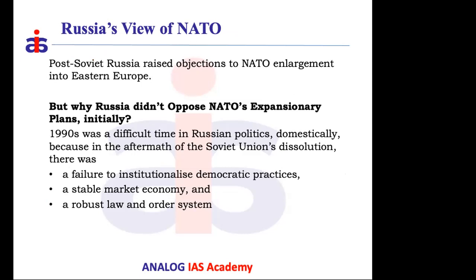Russia always raised objections to NATO's eastward expansion, but in the 1990s it could not effectively oppose it. Russia was economically weak, domestically turbulent, transitioning from a controlled to a market economy, building democratic institutions, and had no resources to mount a military challenge. They objected verbally but could not oppose militarily.